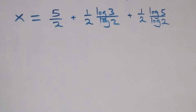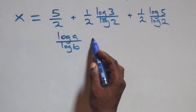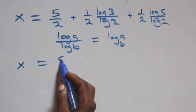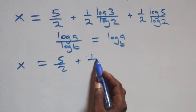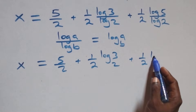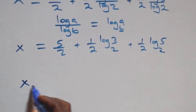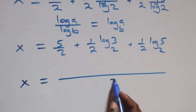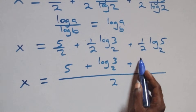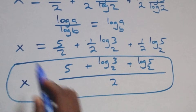We apply the change of base formula: log a over log b is the same as log a to base b. So x equals 5 over 2 plus 1 over 2 log 3 base 2 plus 1 over 2 log 5 base 2. Bringing this together as a single fraction, x equals the quantity 5 plus log 3 base 2 plus log 5 base 2, all over 2.